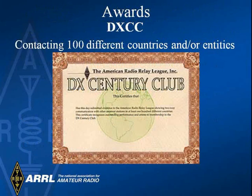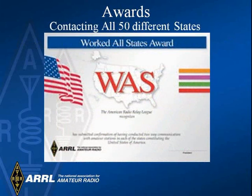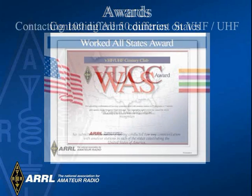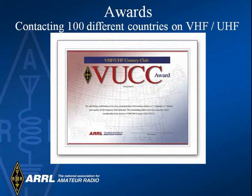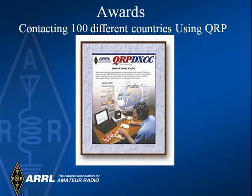There are many awards that can be earned in ham radio. One such award is DXCC for confirming 100 of approximately 340 call zones in the world. Another award is the Worked All States, or WAS, award. An extremely difficult award to earn is VUCC for confirming 100 zones in the VHF or UHF bands. The QRP DXCC award is for confirming 100 zones using only low power, that is 5 watts or less.